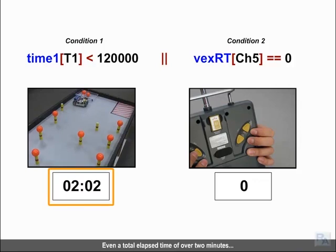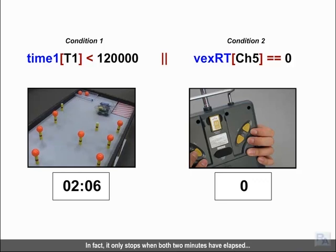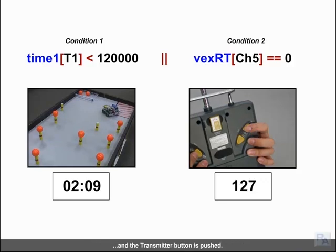Even a total elapsed time of over 2 minutes doesn't stop the robot from being controlled. In fact, it only stops when both 2 minutes have elapsed and the transmitter button is pushed.